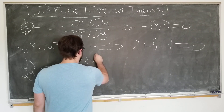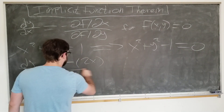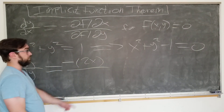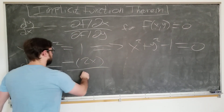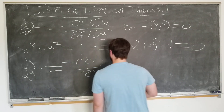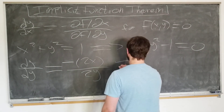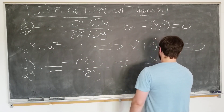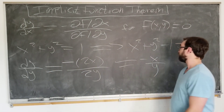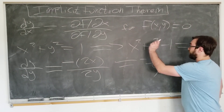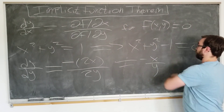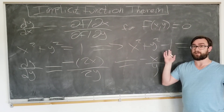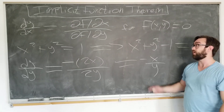That's just 2x over the partial with respect to y, which is 2y. The 2s cancel, giving dy/dx equals minus x over y. You can check this yourself by differentiating and doing the algebra, but you don't have to with this one neat trick.